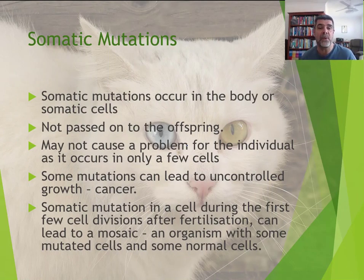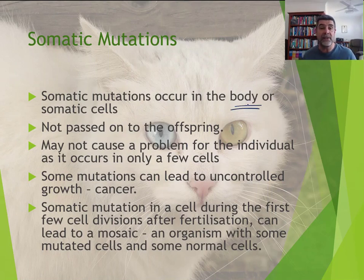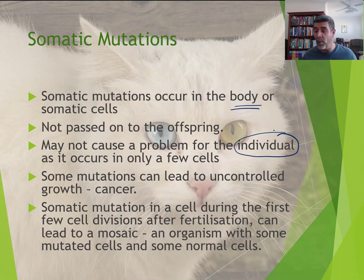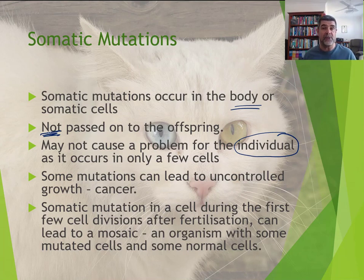On the other hand, somatic mutations are ones that remain in the body and generally speaking are only going to affect the individual. This is a single-generational type change — it's not one that's going to be passed on to the offspring. So we're not going to have these mutations continuing on through different generations.